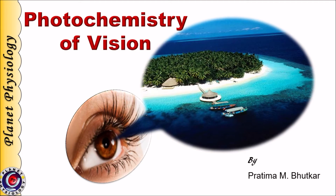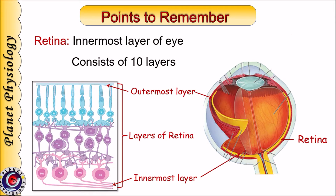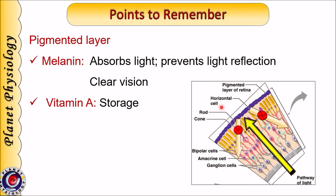Before we start with the topic, let us quickly brush up the important points necessary to understand this concept. Retina is the innermost layer of the eye, as shown in yellow color in this diagram. It is made up of 10 layers. The outermost layer is the pigmented layer, which is in contact with the choroid, whereas the innermost layer is of optic nerve fibers and it is in contact with vitreous. The pigmented layer contains melanin, which helps to absorb light and prevents its reflection. It also stores vitamin A, which is necessary for the formation of photopigments.